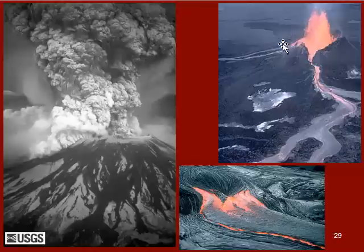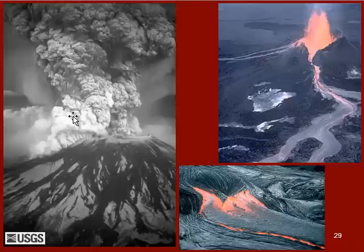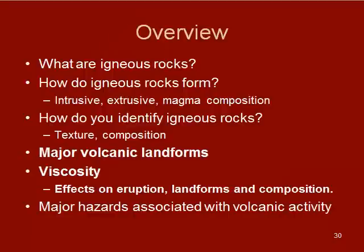With low viscosity, the magma tends to run out and we get those low-sloping features. With high viscosity, we get massive eruptions and material builds up very close to the source. Those are the major volcanic landforms and how they're related to viscosity.